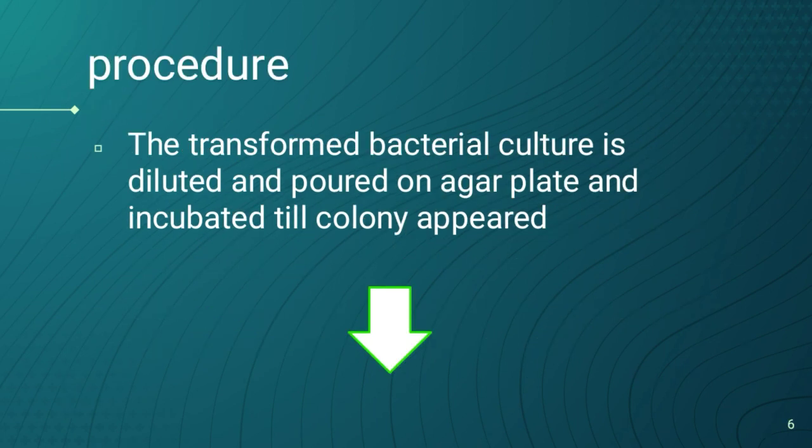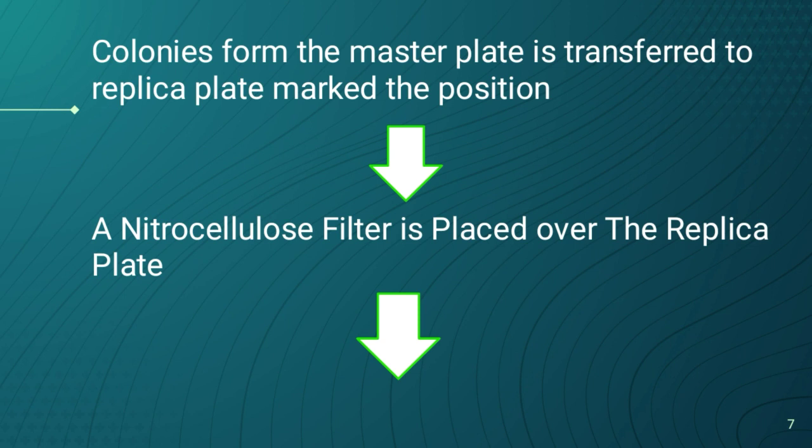Procedure: first, the transformed bacteria are taken, cultured, and then inoculated into a petri plate. The transformed bacterial culture is diluted and poured onto another plate, then incubated in the incubator until colonies appear. The colonies from the master plate are then transferred to the replica plate.